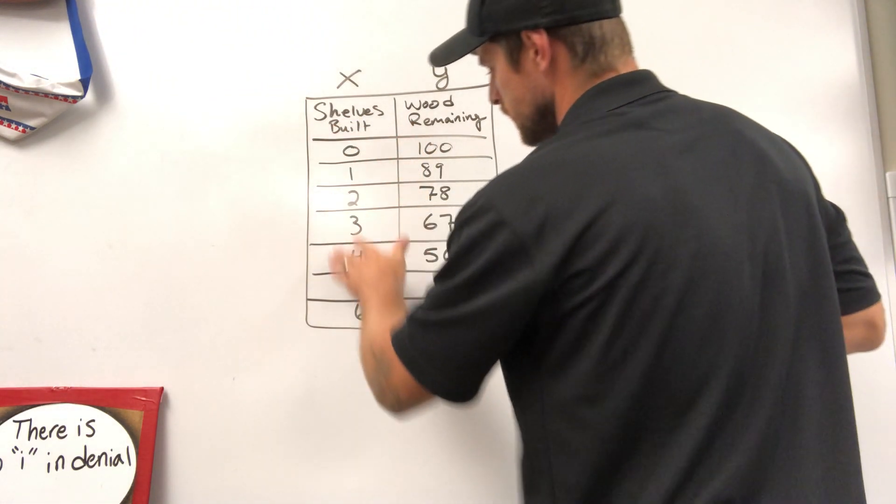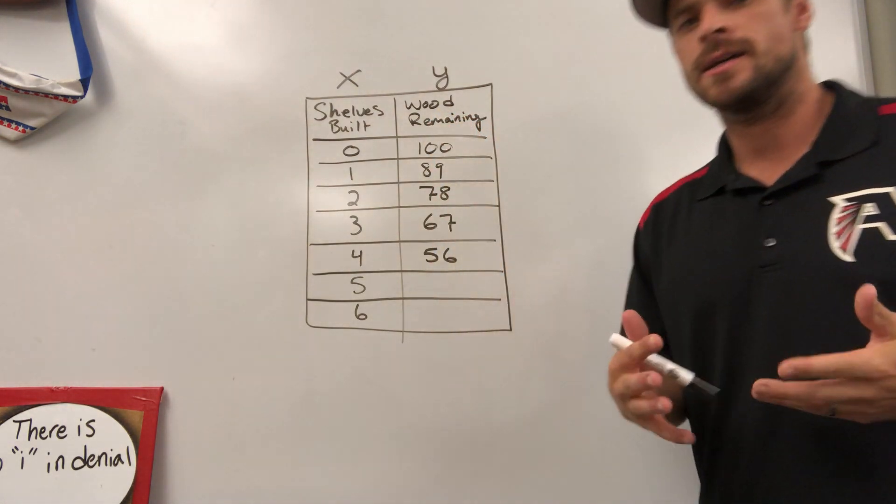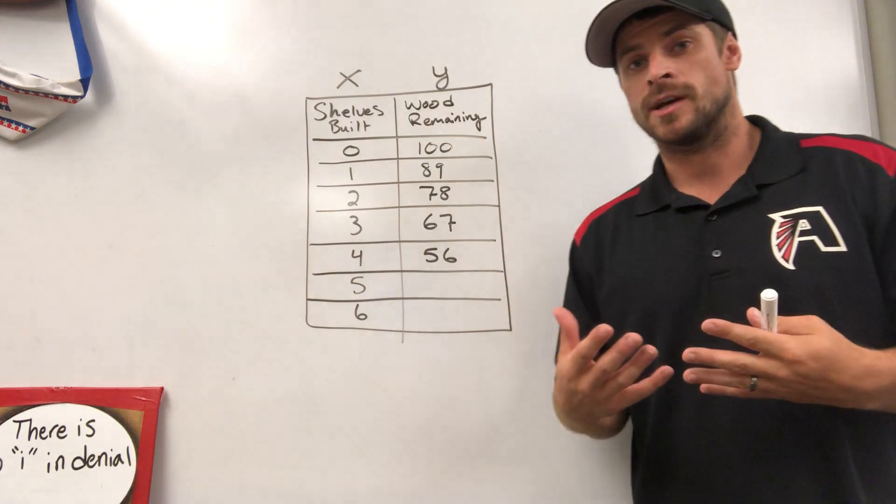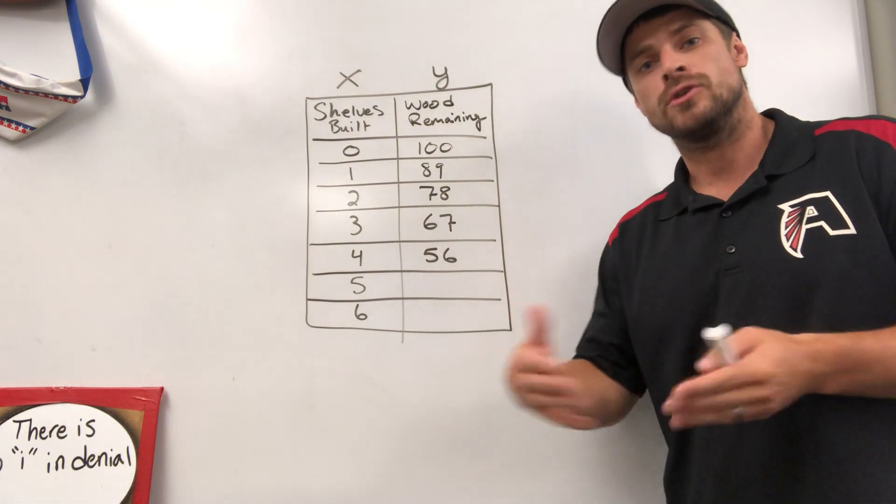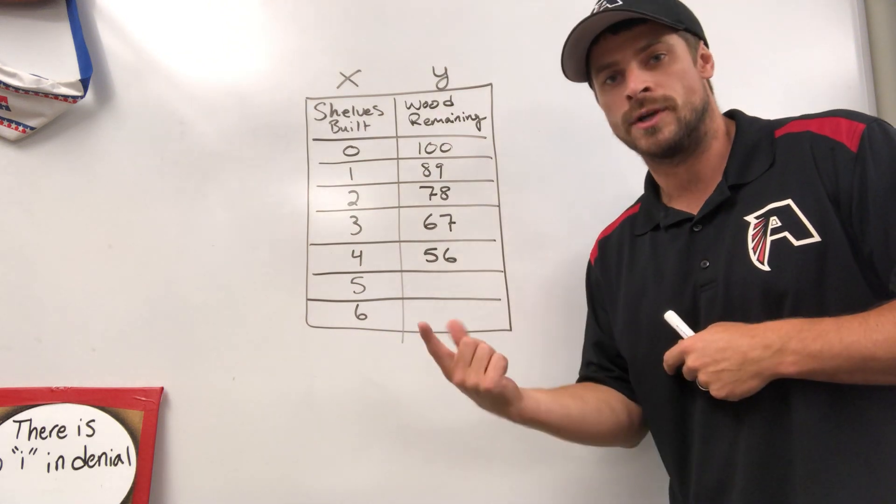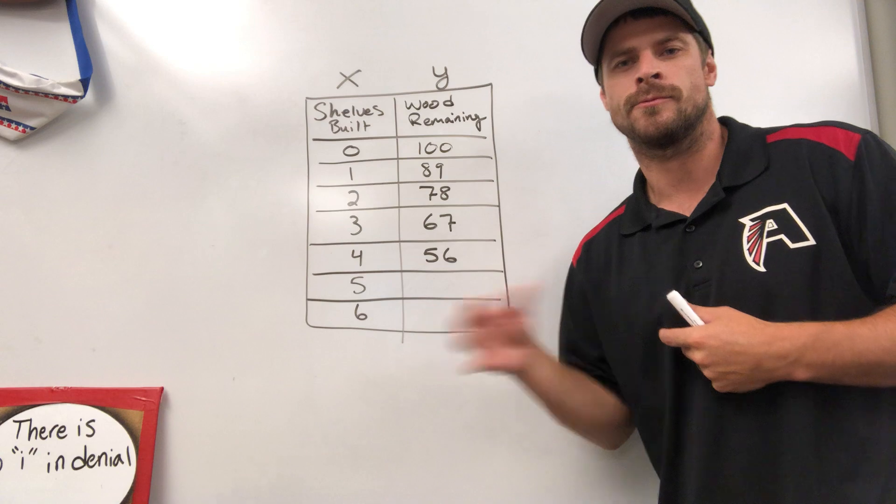We've got shelves built as our X column, wood remaining as our Y column. What we're talking about is somebody that's building shelves, they have a certain amount of pieces of wood, and they're going to use so many pieces to build one shelf, two shelves, three shelves, and that is a constant rate that we're going to find.